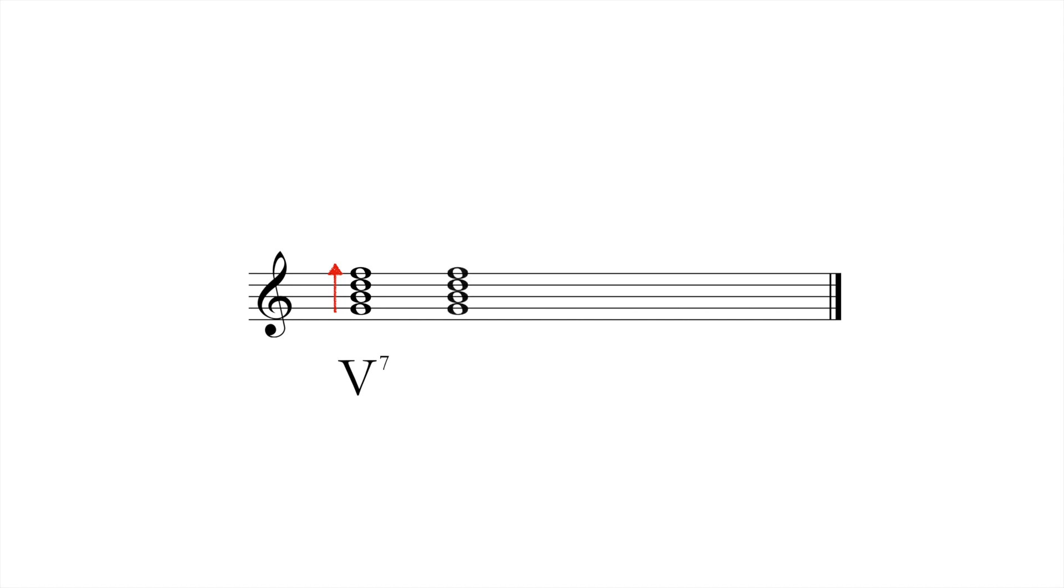A 7th chord in first inversion contains a 6th, a 5th, and a 3rd above the bass, and is abbreviated 6-5, which, as a short form, leaves out the figure 3. Likewise, 2nd and 3rd inversion chords are abbreviated as 4-3 and 4-2.